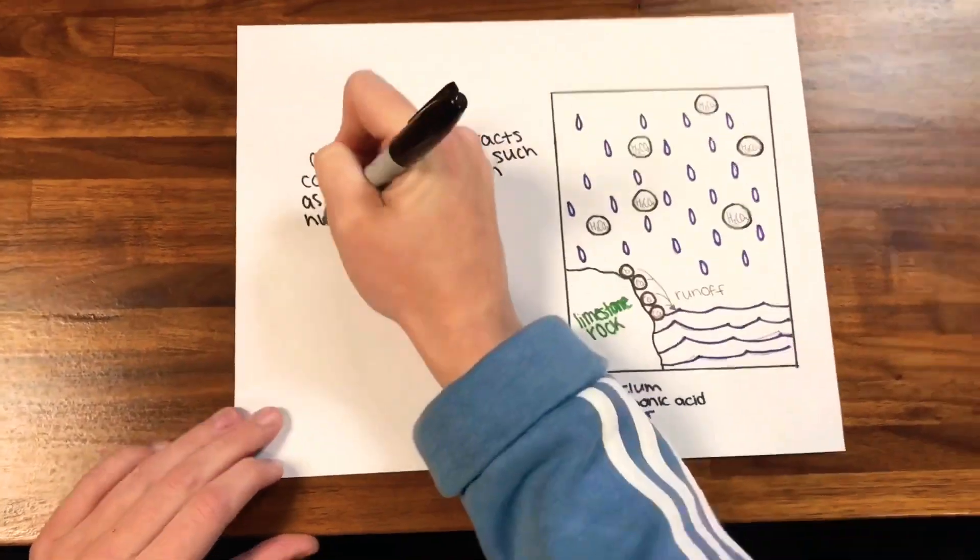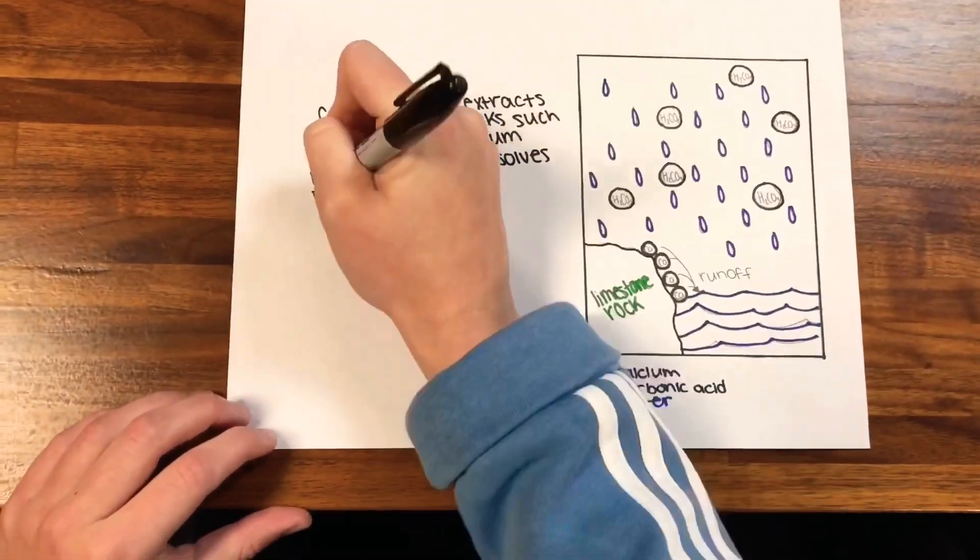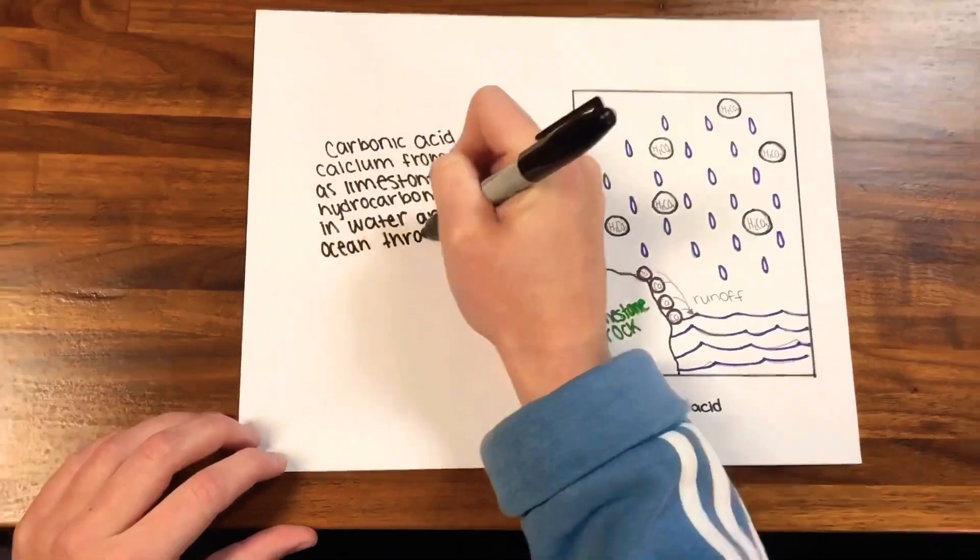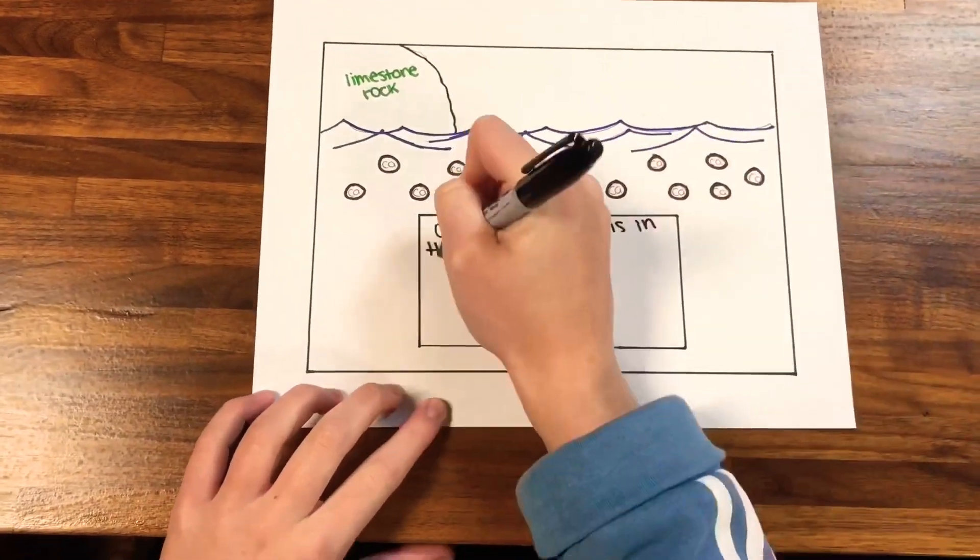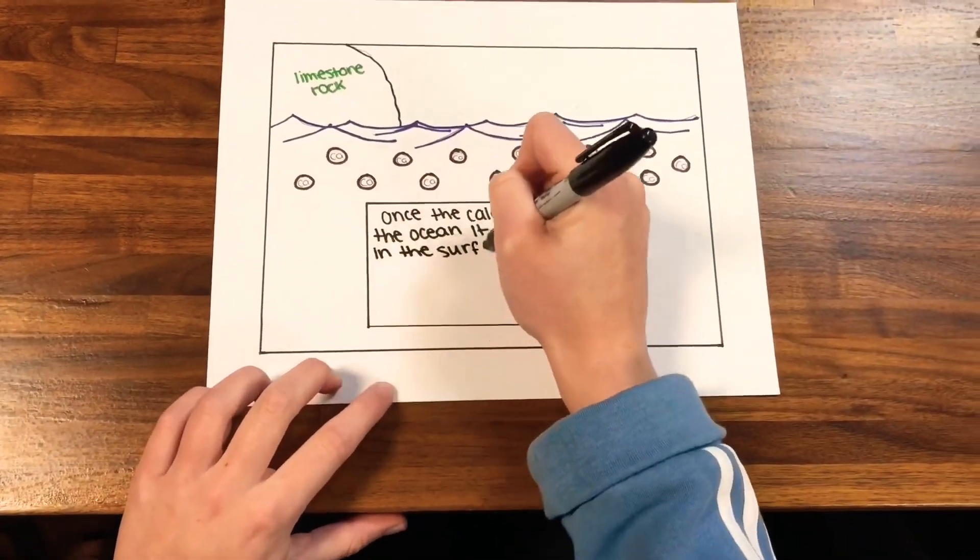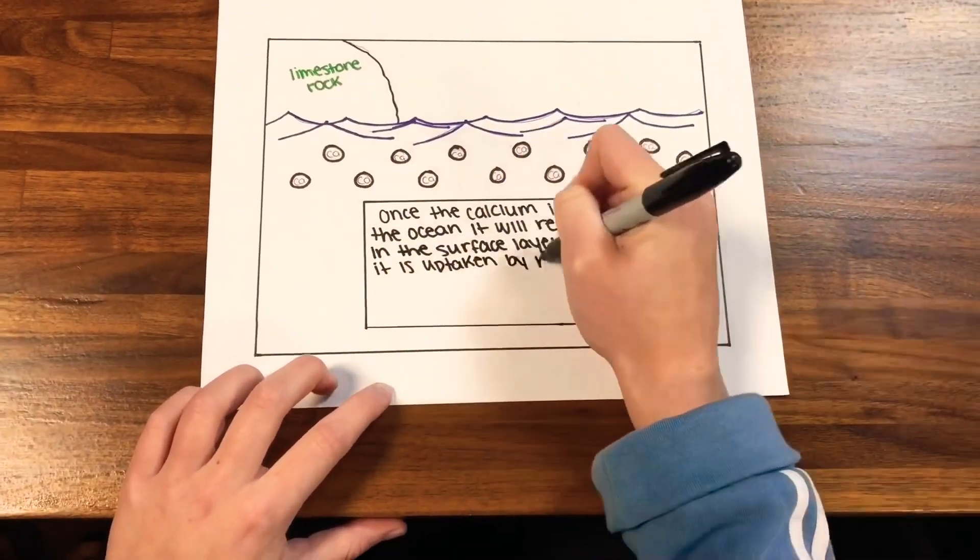Calcium hydrocarbonate dissolves in water and enters the ocean through surface runoff. Once the calcium is in the ocean, it will remain in the surface layer until it's uptaken by marine organisms.